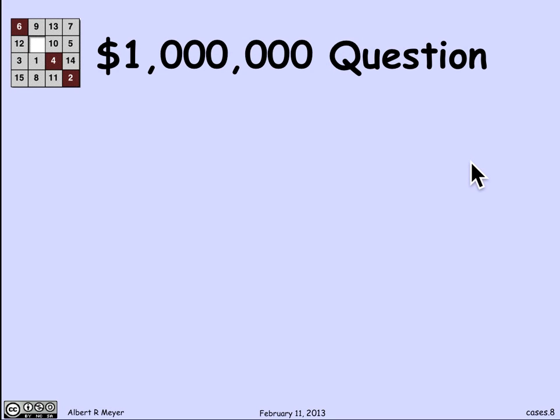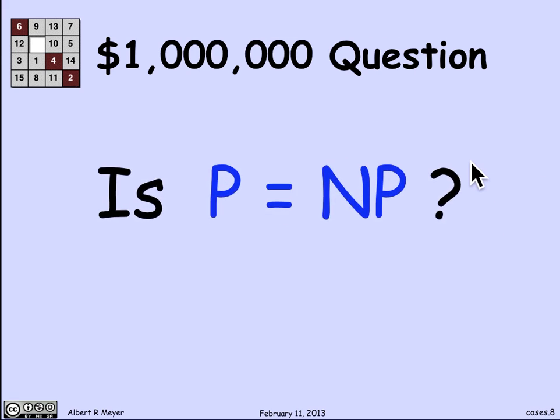There's a million dollar Clay Institute question, one of, I think, a dozen or so questions that are considered to be the major open problems in various disciplines of mathematics. And one of the disciplines of mathematics is complexity theory in computer science, computational complexity theory. This question is known as the P equals NP question. And we're actually going to talk about it a fair amount in just the coming few lectures. But for now, it doesn't matter what it means.